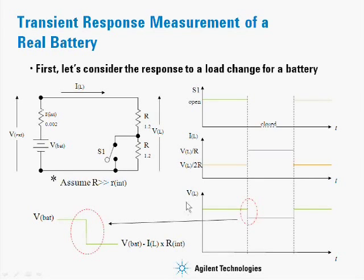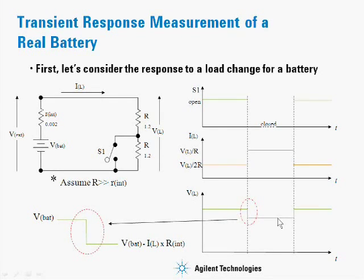What you can see in the third graph is what happens when you switch from open to closed. The output voltage at the load, VL, starts out at a higher level. Then when you change to the higher current, that internal resistance causes an additional voltage drop, so the voltage at the load drops down to V_battery minus IL times R_internal. Then when the switch is opened, it returns to its original voltage.